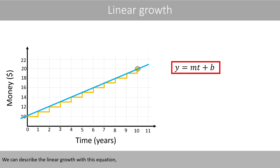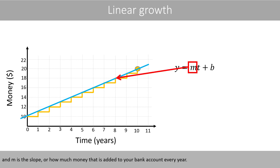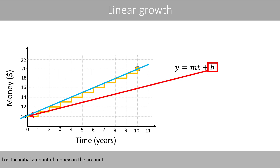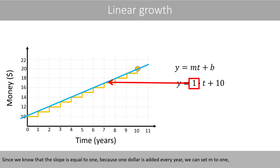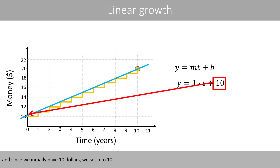We can describe the linear growth with this equation, where T is the time in years, and M is the slope, or how much money is added to your bank account every year. B is the initial amount of money on the account, and Y is how much money there is in the bank account at a certain time point. Since the slope is equal to one — because one dollar is added every year — we set M to one. And since we initially have ten dollars, we set B to ten.